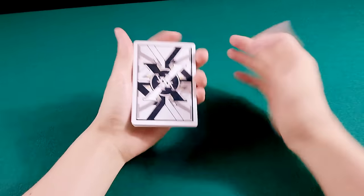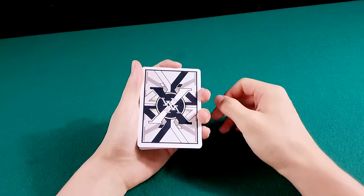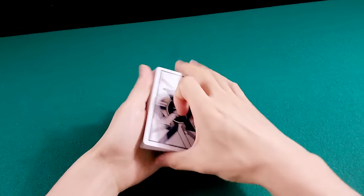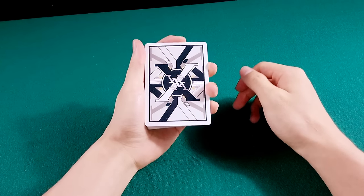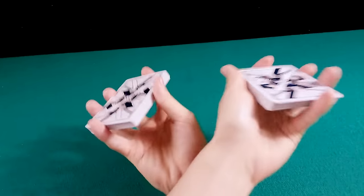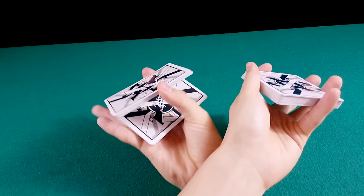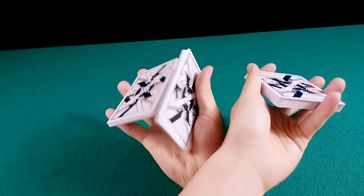Uma técnica ou combo legal para você treinar o Revolution Cut com as duas mãos é fazer o seguinte. Começar em Mechanics Grip. Fazer o Swivel Cut. Cruzar as mãos. Você vai fazer o corte com a mão direita. Revolution Cut.